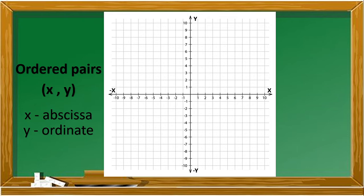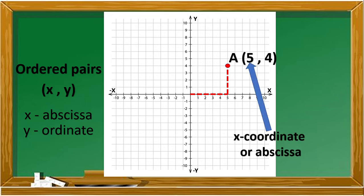To graph point A in the coordinate plane, let's start on the origin and move five units to the right, and then move four units up. Therefore, the coordinate of our point A is five and four. The two numbers, five and four, paired with the given point are called the coordinates of that point. The number five is called the x-coordinate or the abscissa, and four is called the y-coordinate or the ordinate.